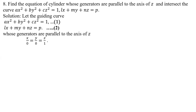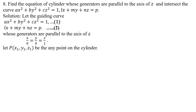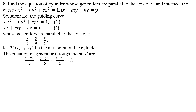The direction ratios are 0, 0, 1. Therefore, the equation of the line is: x/L = y/m = z/n, where L = 0, m = 0, and n = 1, because the generators are parallel to the axis of z. Let P be any point on the surface of the cylinder. Therefore, the equation of the generator passing through point P is: (x − x₁)/0 = (y − y₁)/0 = (z − z₁)/1 = k.